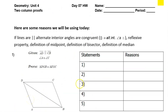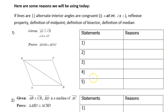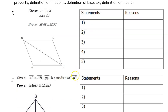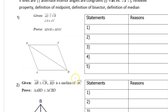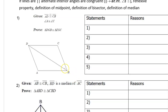I'm going to save the next set of proofs for the next video. If you'd like to see more congruent triangle proofs involving things like alternate interior angles, go ahead and watch the next video.